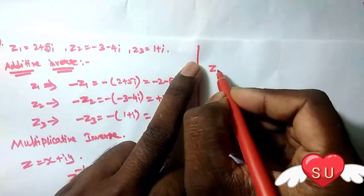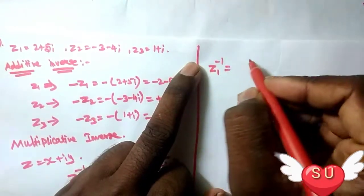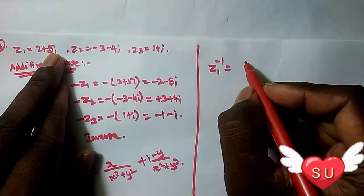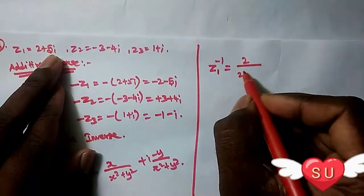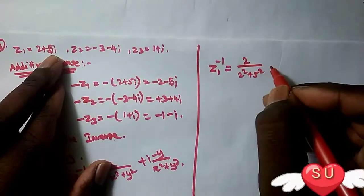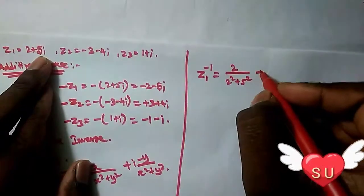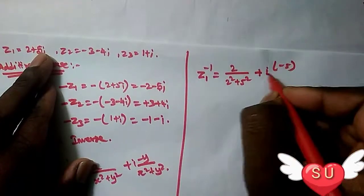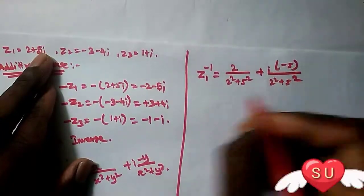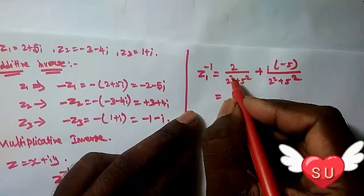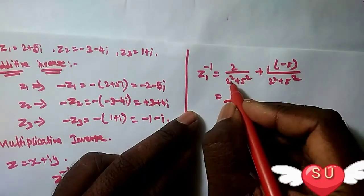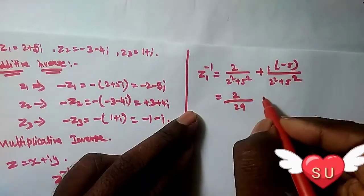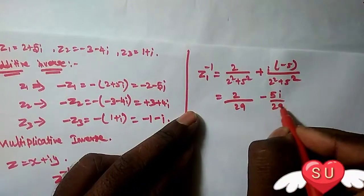First, z₁ inverse: z₁ has x value 2 and y value 5. So 2 divided by (2² + 5²) plus i times (-5) divided by (2² + 5²). That's 2 divided by (4 + 25), which is 2/29 plus i times (-5/29), giving us 2/29 - 5i/29.